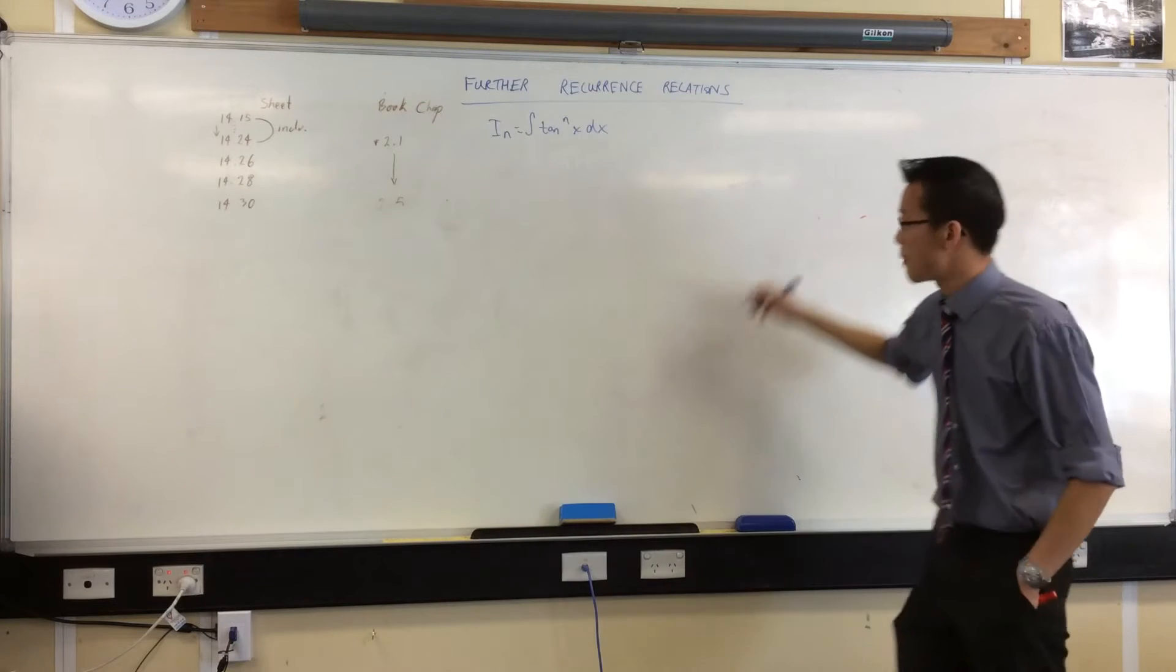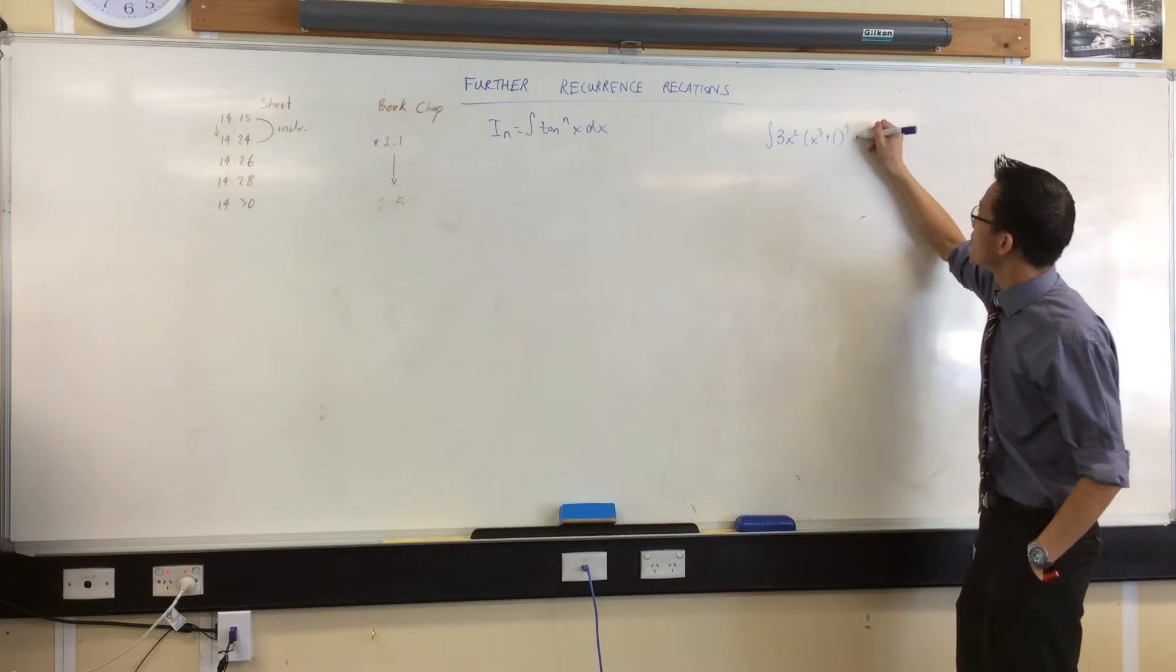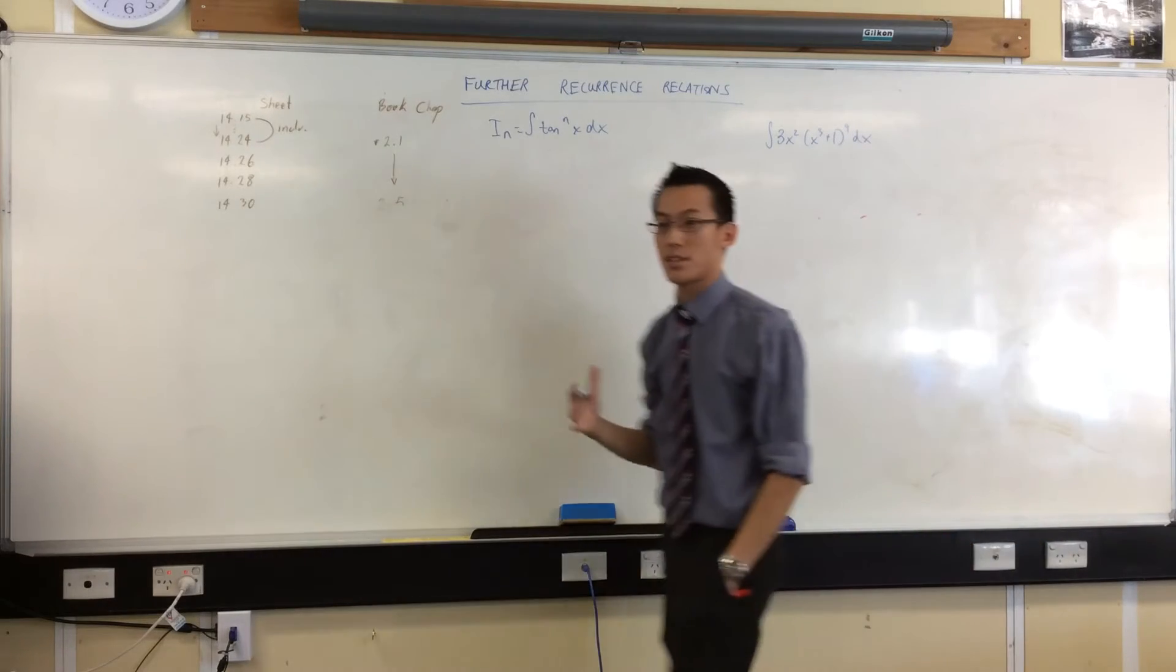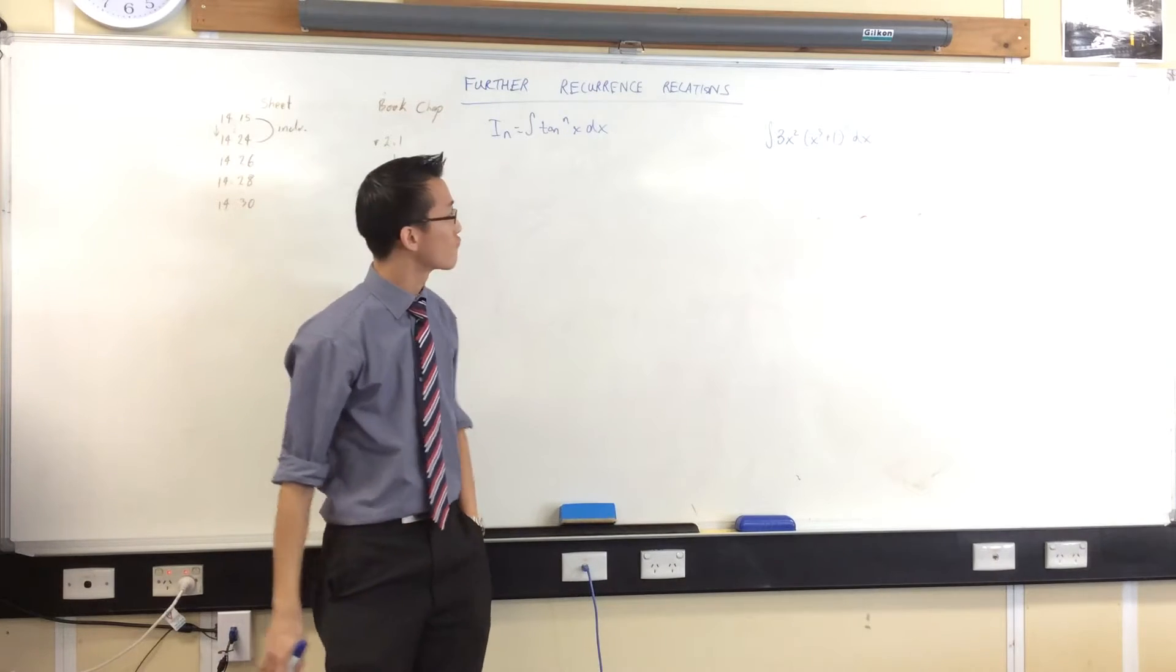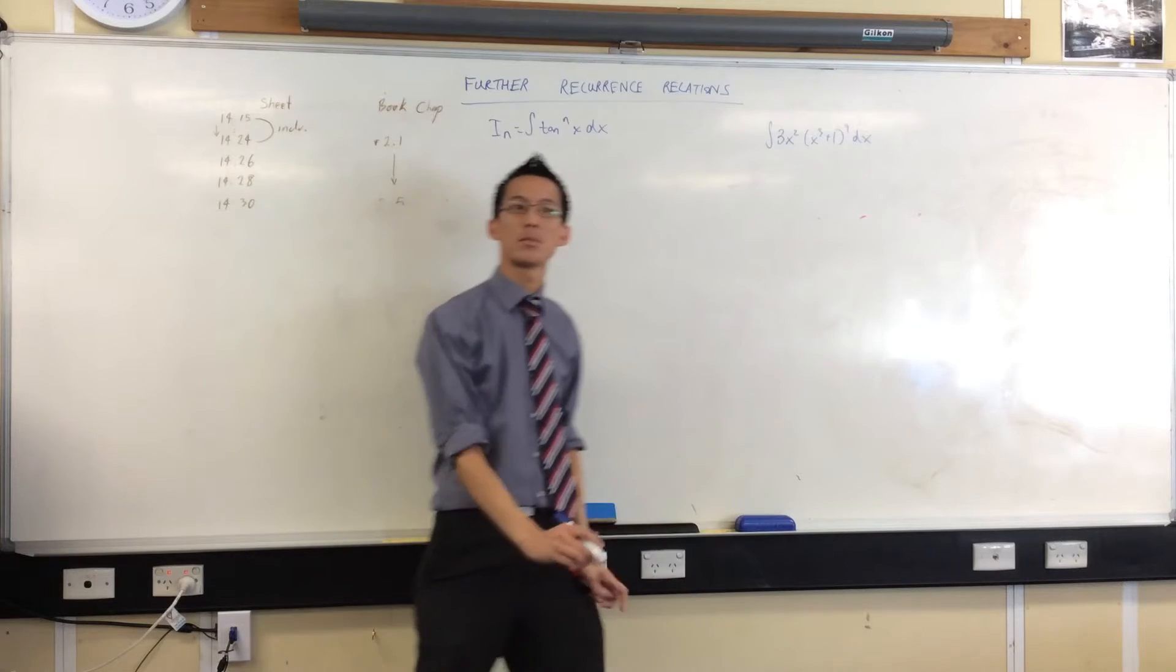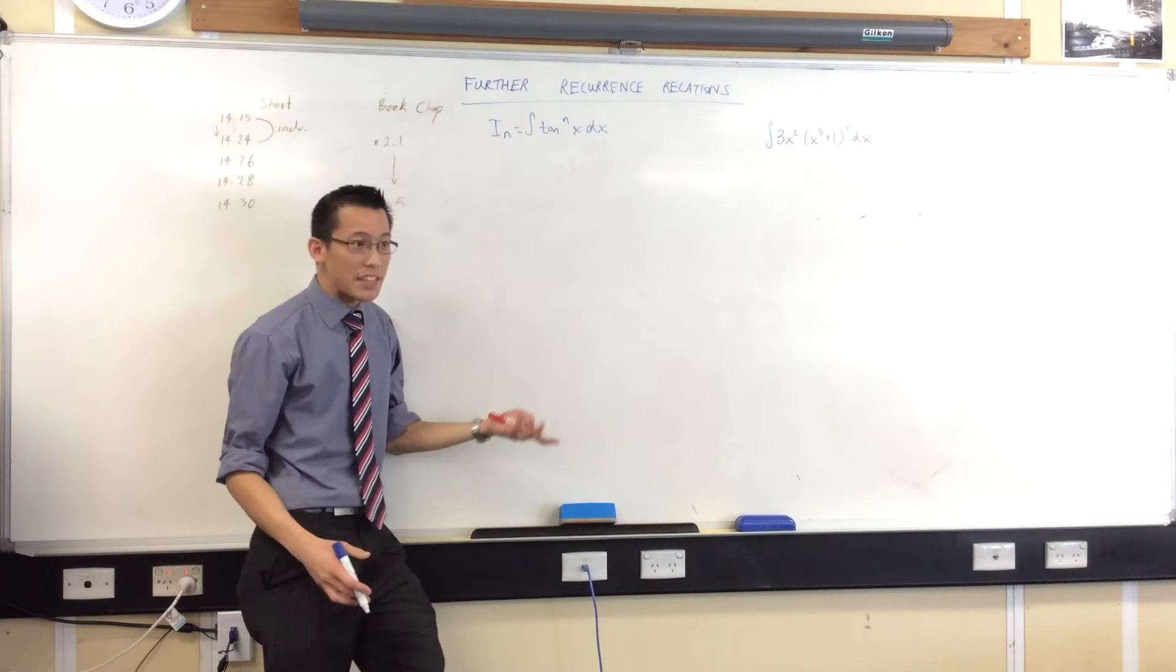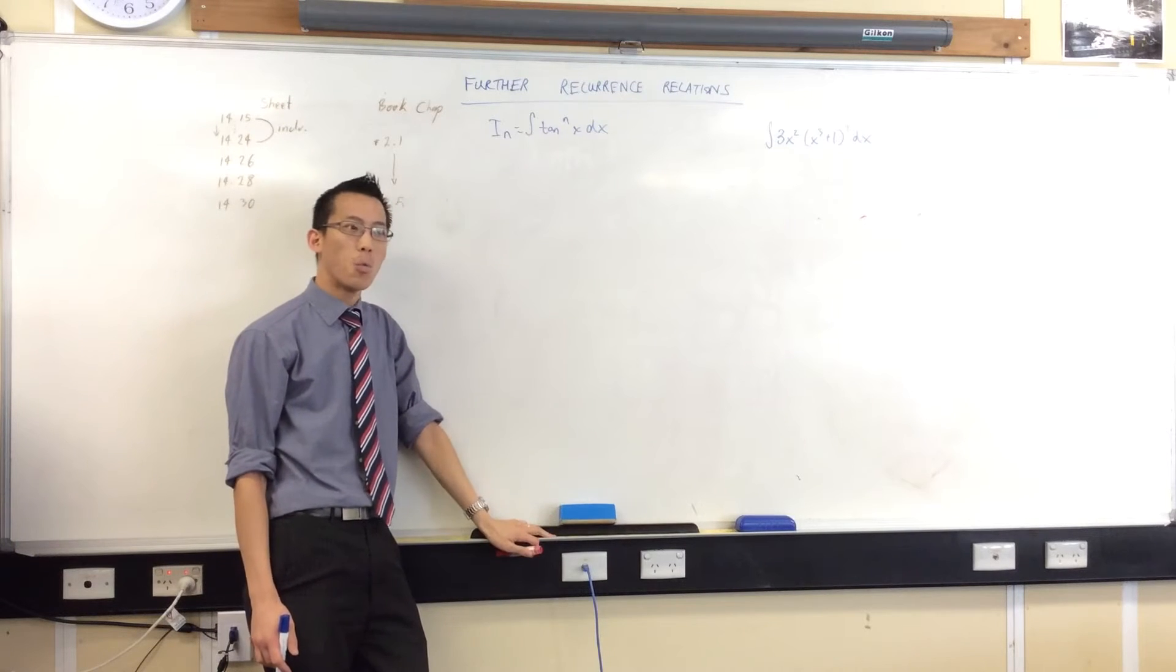Now, remember the example I just gave. It was easy because you could see the f dash and you could see the f nice and simple. There's the f dash, there's your f to the power of nine, no problems. Now, believe it or not, there is an f dash and an f in here, hiding. The question is, where?